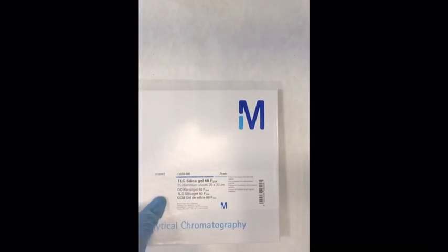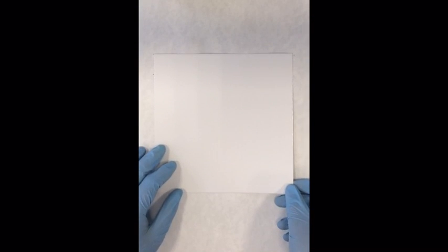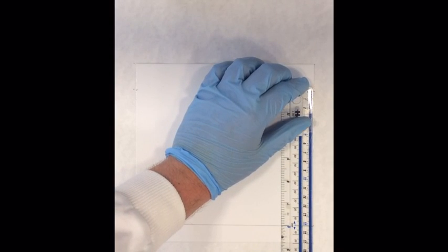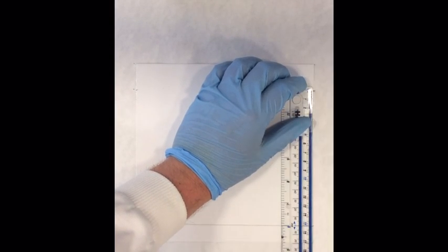Taking your TLC plate, carefully rule out the dimensions of the plate. The baseline should be 2 centimeters from the bottom of the plate and the developing distance should be 10 centimeters from the bottom of the baseline. These are the standard distances according to the British Pharmacopeia.